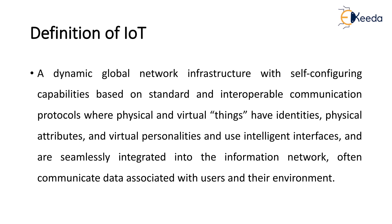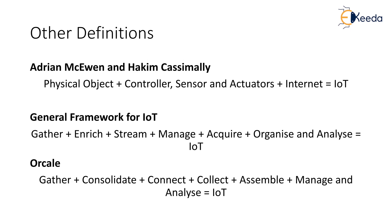IoT means internet plus things — internet connectivity connecting the things. Things may be a physical object or physical quantity which can be converted with the help of sensors and through gateways. Another definition by Adrian McQuinn and Hakim Casimili: physical objects plus controllers, sensors, and actuators plus internet equals IoT.